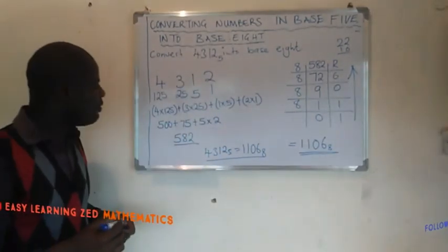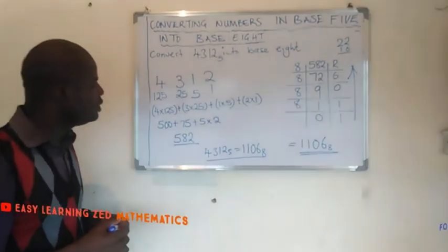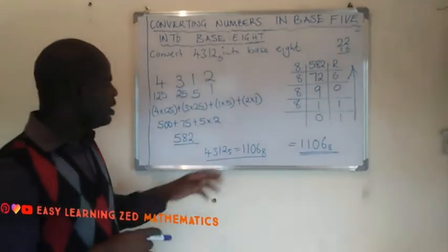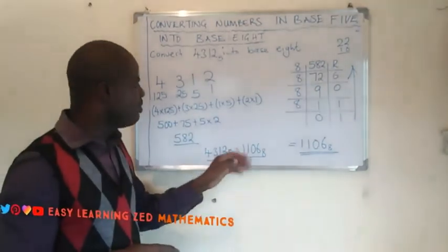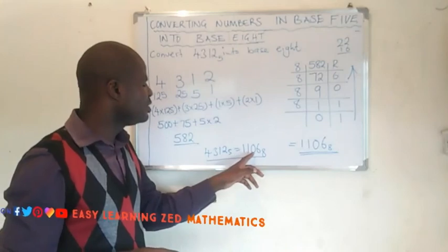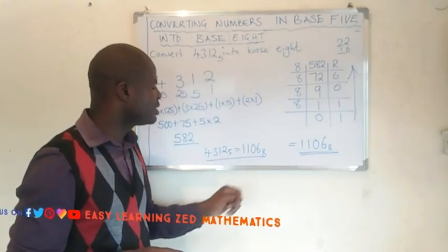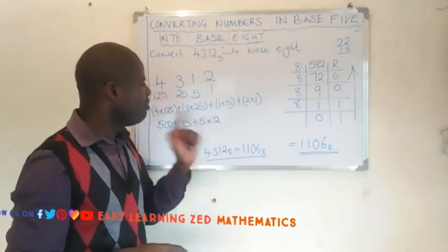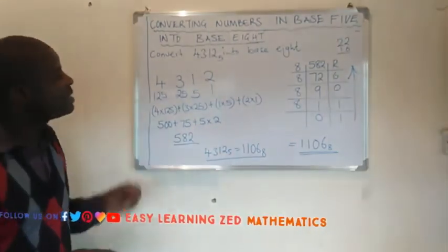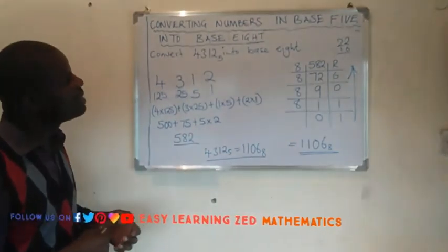So converting 4312 base 5 into base 8 gives us 1106 base 8. This is basically how we convert numbers in base 5 into base 8. Thank you so much for watching.